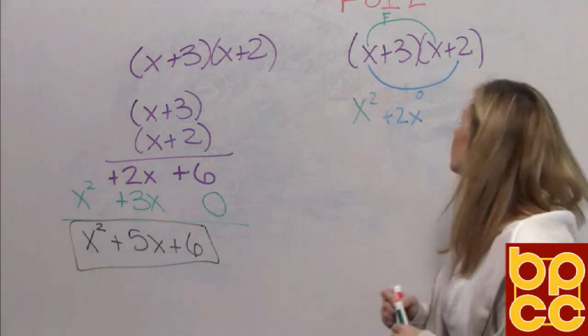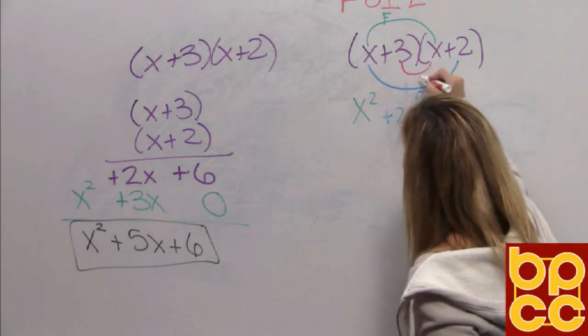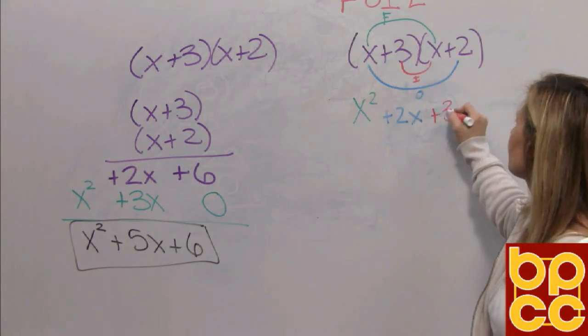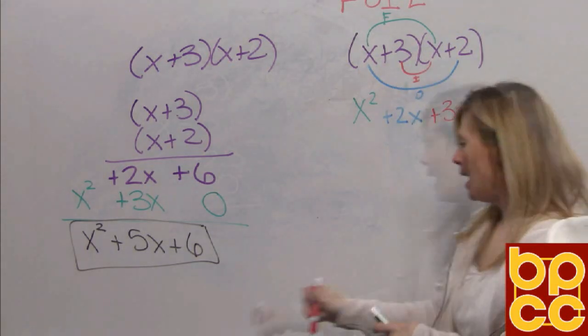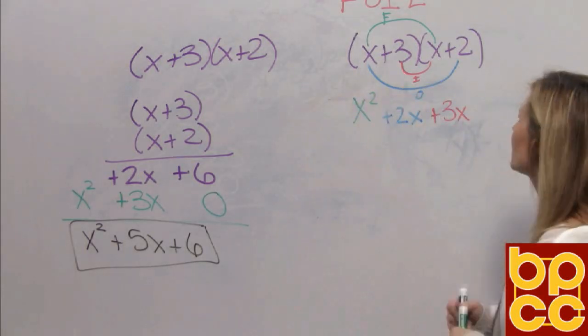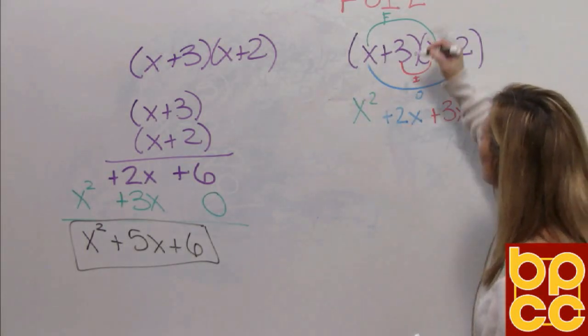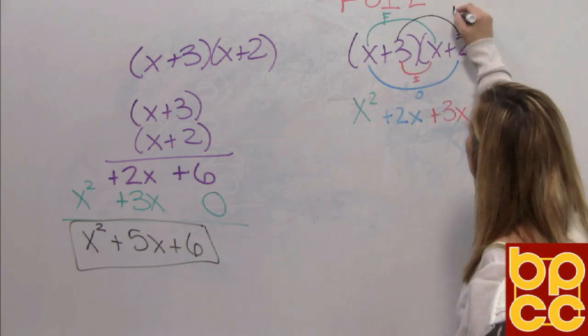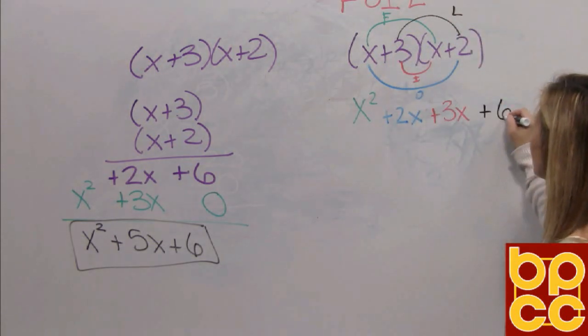The inner terms are on the inside. Positive 3 times x is positive 3x. And like we did a minute ago with conjugates, L is last. The last terms are the last two in the parentheses. Positive 3 times positive 2, which is positive 6.